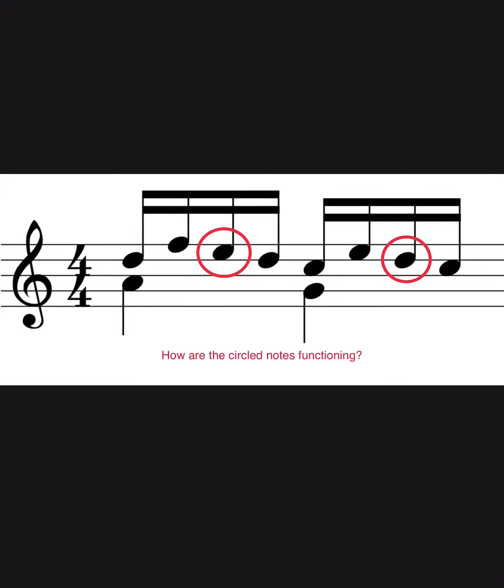Hi, everyone. So the question here is, how are the circled notes functioning? There's a few steps in this process, but what we basically want to do is lump as many notes as we can into chord tones, and then we're going to have some non-chord tones left over.